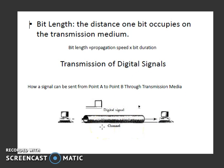So when a signal is transmitted from point A to point B, what do you think can happen to the signal? You may please think about it and submit it along with the assignment — it will be one assignment question. Thank you.